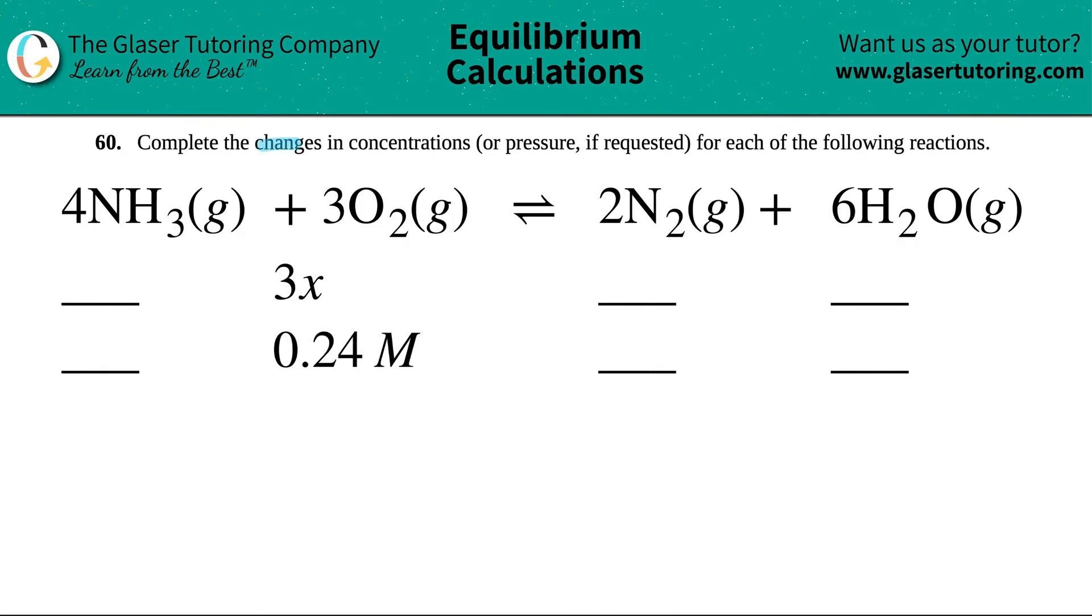Number 60, complete the changes in concentrations or pressure if requested for each of the following reactions. We have this example: we need to find out the changes in concentration for 4NH3 gas plus 3O2 gas, which comes to equilibrium with 2N2 gas plus 6H2O gas.